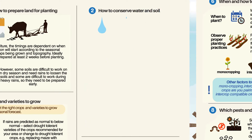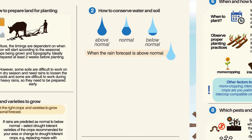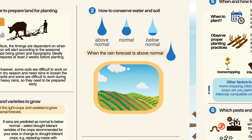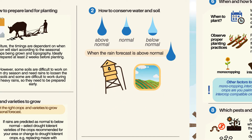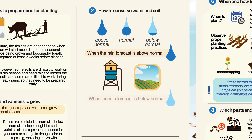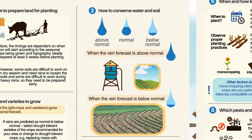How to Conserve Water and Soil: Based on seasonal forecast on the amount and duration of rains expected, consider introducing appropriate soil and water conservation measures. When the rain forecast is above normal, the focus should be on controlling erosion, protecting agricultural produce from flooding, and water harvesting. When the rain forecast is below normal, the focus should be on applying appropriate soil moisture and water conservation techniques.